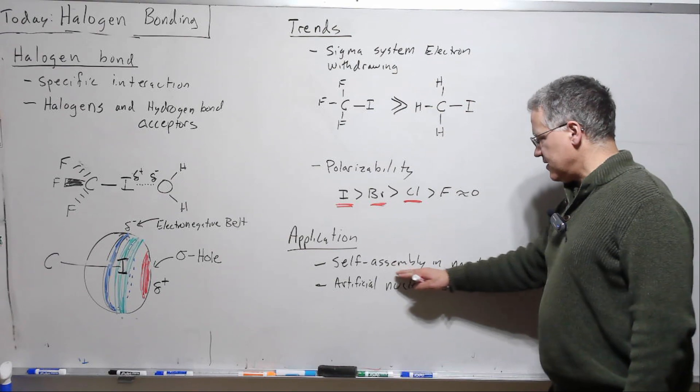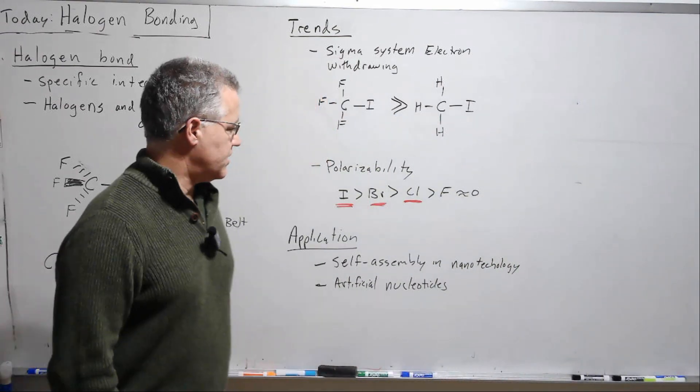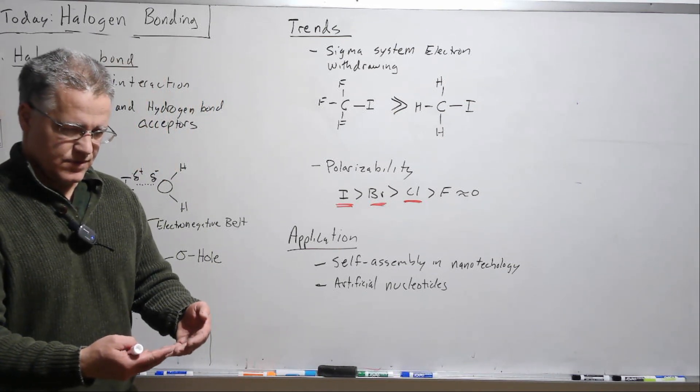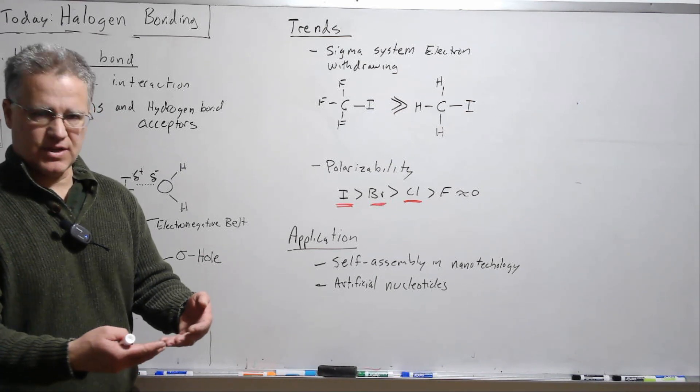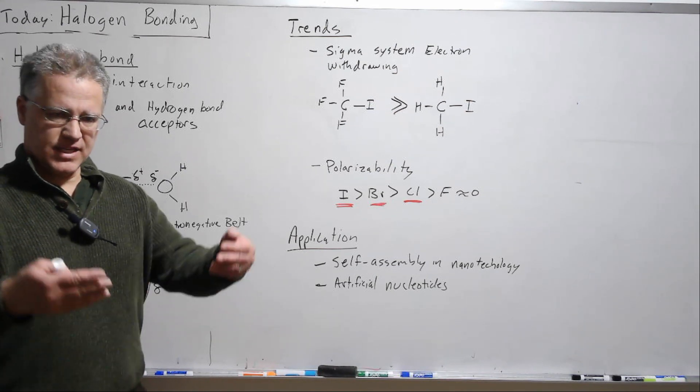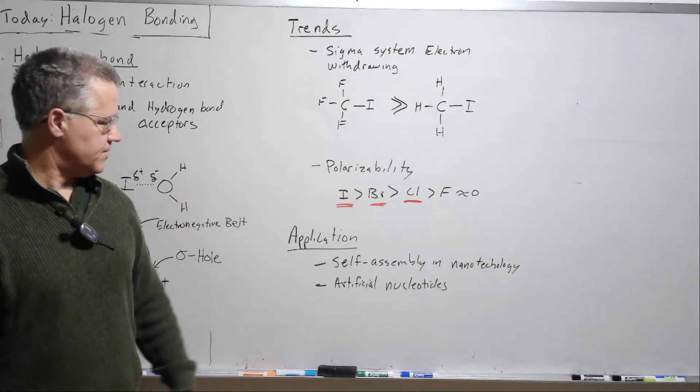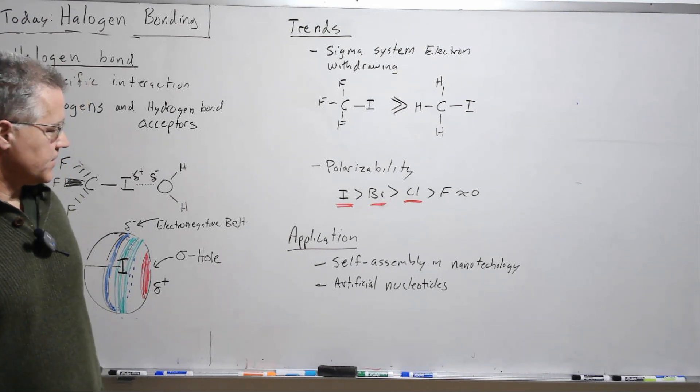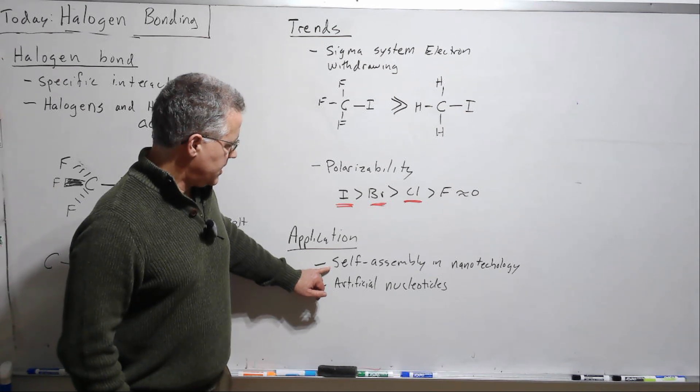Definitely though, in man-made systems, the self-assembly of nanomaterials. So in nanotechnology, halogen bonding can help to self-assemble different bits because the orientation is direct, the bond is directed. And so that can help with that. Extensive literature there. In fact, it's the largest body of literature for halogen bonding.